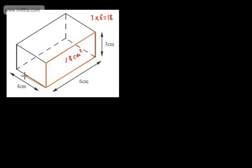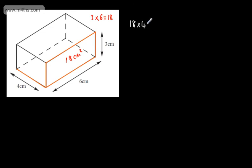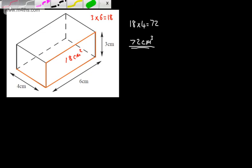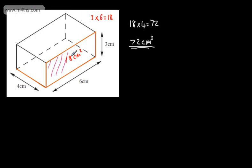To find the volume, I simply need to multiply this by the length. The length is 4 cm. So my calculation becomes 18 times 4, which gives me 72, and the units we use are cm cubed. This is a 3D shape and it's volume, so we're going to have our answer in cm cubed. If this was meters, we'd have meters cubed; if it was kilometers, kilometers cubed. All I've done is taken the area of one of the cross-sections and multiplied it by the length to give us the volume.